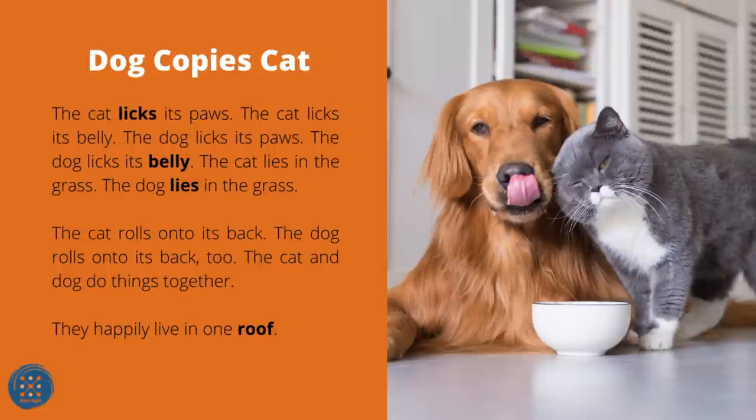Dog Copies Cat. The cat licks its paws. The cat licks its belly. The dog licks its paws. The dog licks its belly. The cat lies in the grass. The dog lies in the grass. The cat rolls onto its back. The dog rolls onto its back too. The cat and dog do things together — they happily live under one roof.